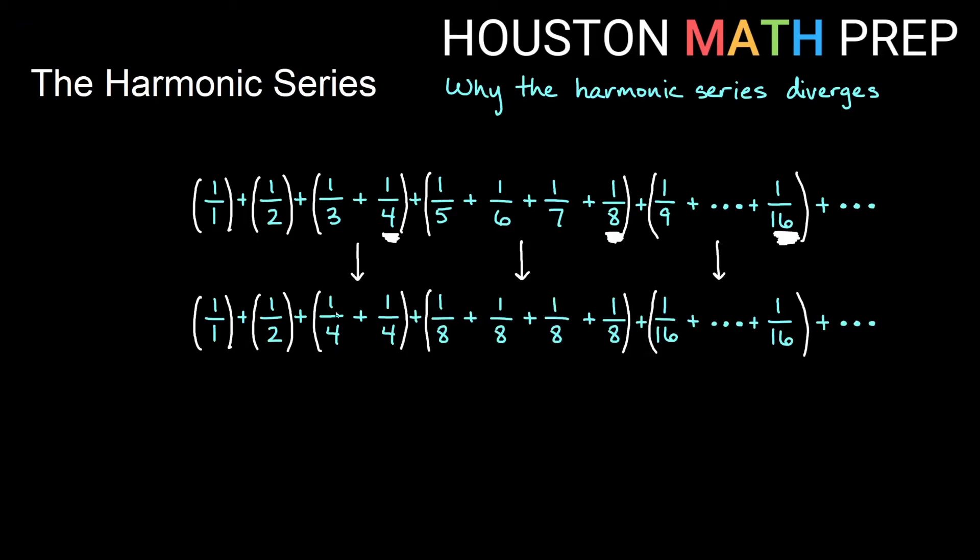then we end up with a couple of 1 fourths and some 1 eighths and then a bunch of 1 over 16s and then we'd have a bunch of 1 over 32s. And so what has changed as we move from here to here? Has my sum here gotten larger or smaller making this change? And if you maybe look at the 1 fifth through 1 eighth group here, the 1 fifth, the 1 sixth, and the 1 seventh have all changed to 1 eighth. Are those bigger or smaller? Well 1 eighth is the smallest term in this group, so all of these have become smaller than they were before.